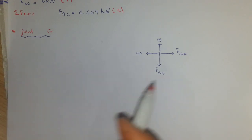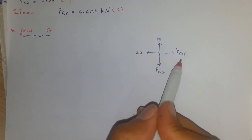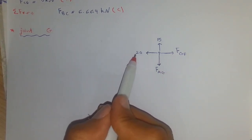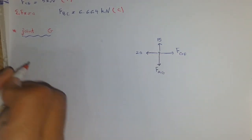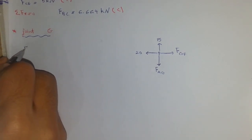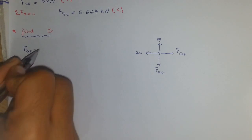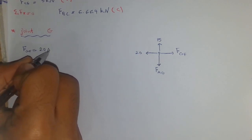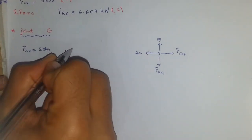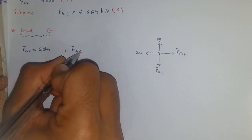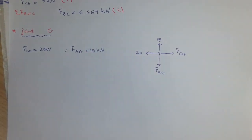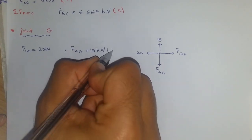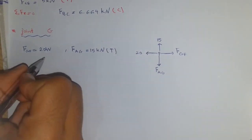At joint G, we have forces in the same line of action. F_GF equals 20 kilonewtons and F_AG equals 15 kilonewtons. Both F_AG and F_GF are in tension.